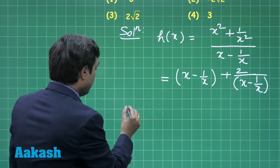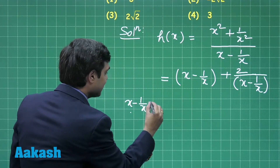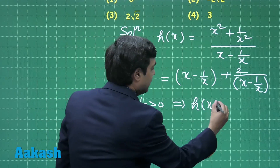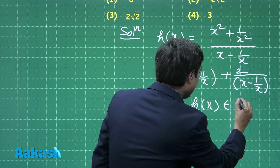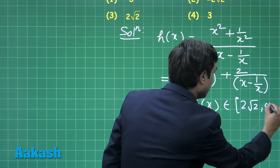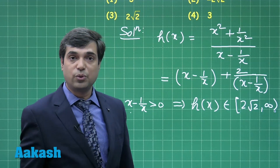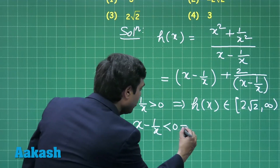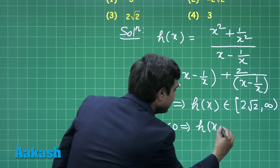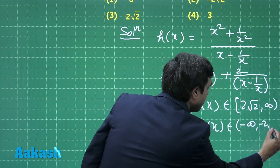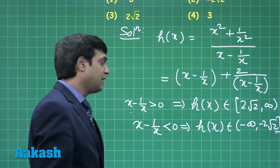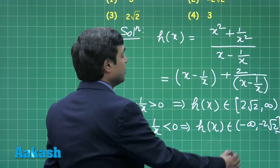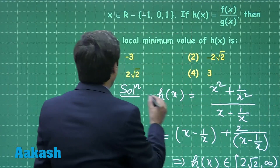We have two possibilities. When x − 1/x is greater than 0, we can clearly see that h(x) is greater than or equal to 2√2, so h(x) lies in the interval [2√2, ∞). Similarly, if x − 1/x is less than 0, h(x) belongs to (−∞, −2√2]. So clearly, the local minimum value is 2√2, and the correct answer is option 3.